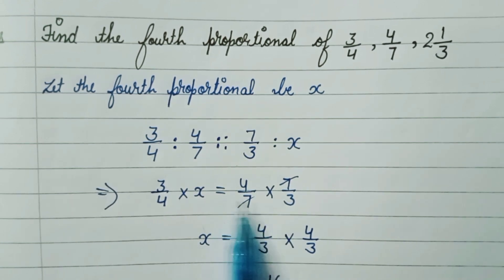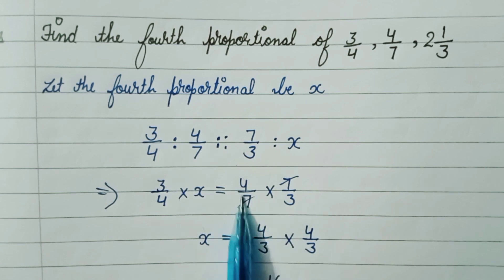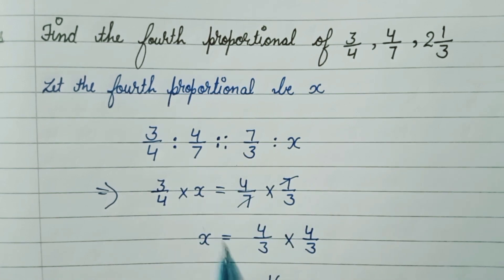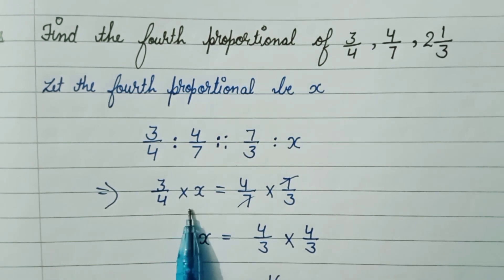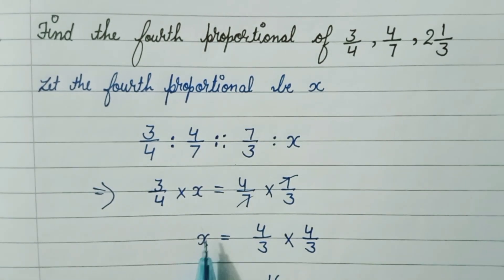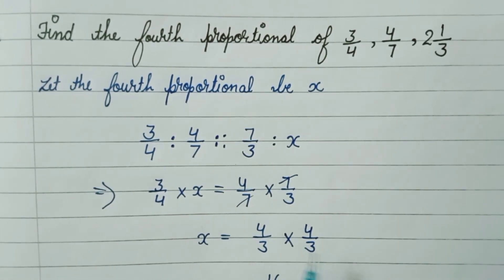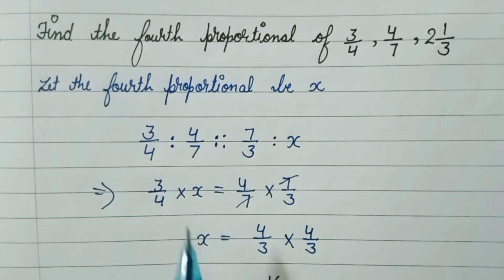Now we solve this. Seven cancels with seven, then we have 4/3. When 3/4 comes to the right-hand side, it will be multiplied and reciprocated, so 3/4 becomes 4/3. Now we multiply this.